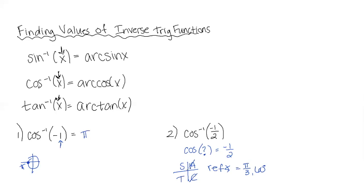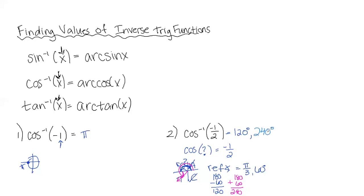With a reference angle of 60 in the second quadrant, I do 180 minus 60, which gives me 120 degrees. My other answer comes from quadrant three: 180 plus 60 gives me 240 degrees. So my two answers are 120 and 240 degrees. In radians, 120 degrees is 2π/3 and 240 degrees is 4π/3.